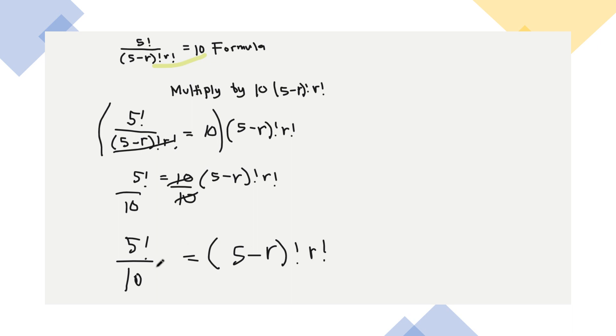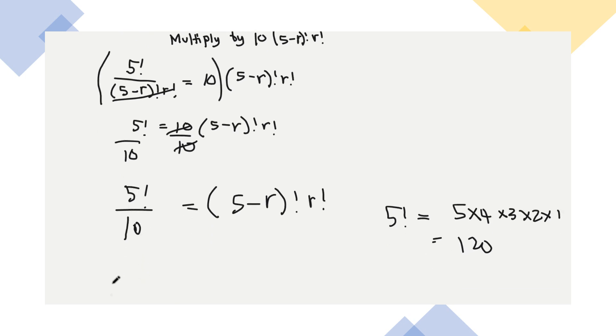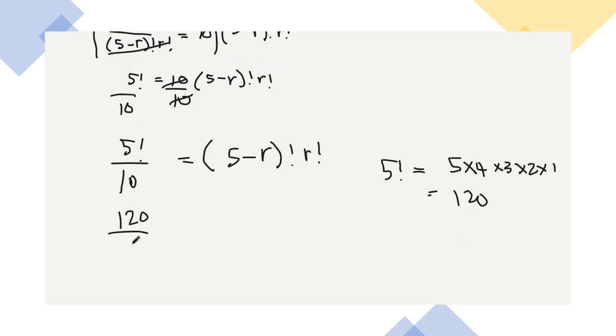So yung 5 factorial na yan, ano ba yung 5 factorial? Pag sinabing 5 factorial, ibig sabihin, ang gagawin mo dyan ay 5 times 4 times 3 times 2 times 1. Yan yung factorial na sinasabi. So 5 times 4 times 3 times 2 is equals to, you were right. So 120 yan. Okay. So therefore, yung 120 divided by 10, that is 12. Ito, yung 5 factorial, o lagyan na nga lang natin. Yung 5 factorial is 120 divided by 10.